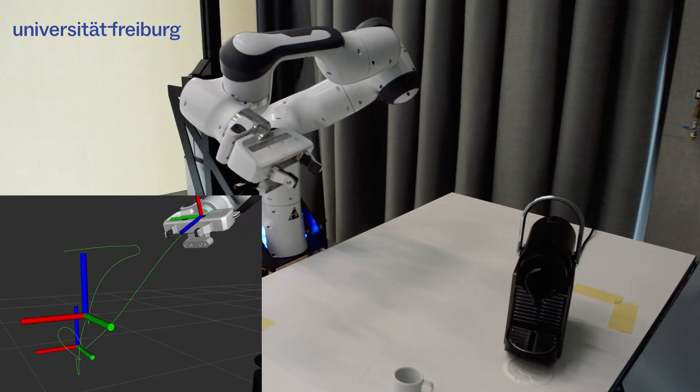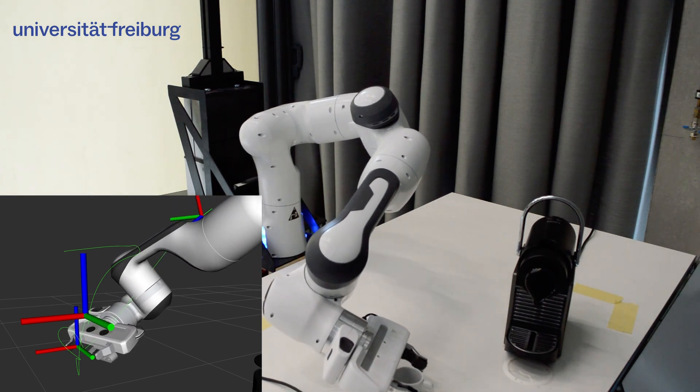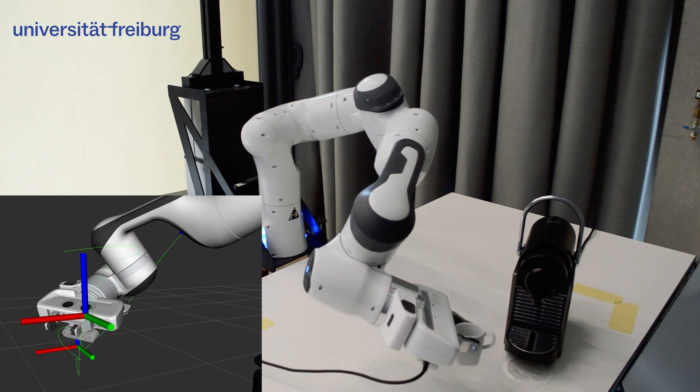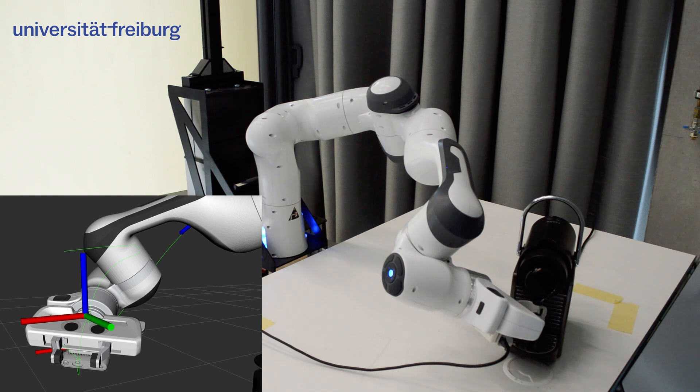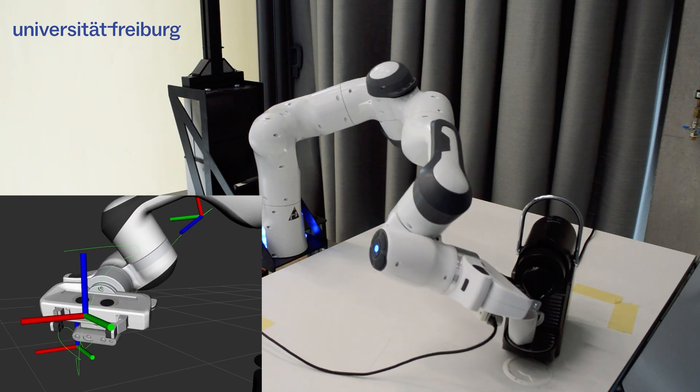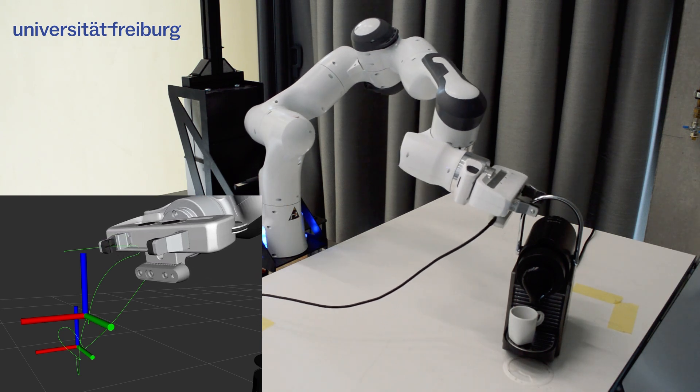As we also demonstrate later in the video, generating the candidate task parameters from visual observations enables Tapas GMM to generalize across object instances, clutter and task environments. You can see the robot solving this long horizon coffee making task in real time.